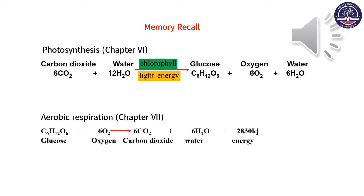Aerobic respiration — chapter 7 is aerobic respiration. When we look at respiration, the respiration of our body is large. When we get a supply of oxygen, we can go to the source of oxygen.